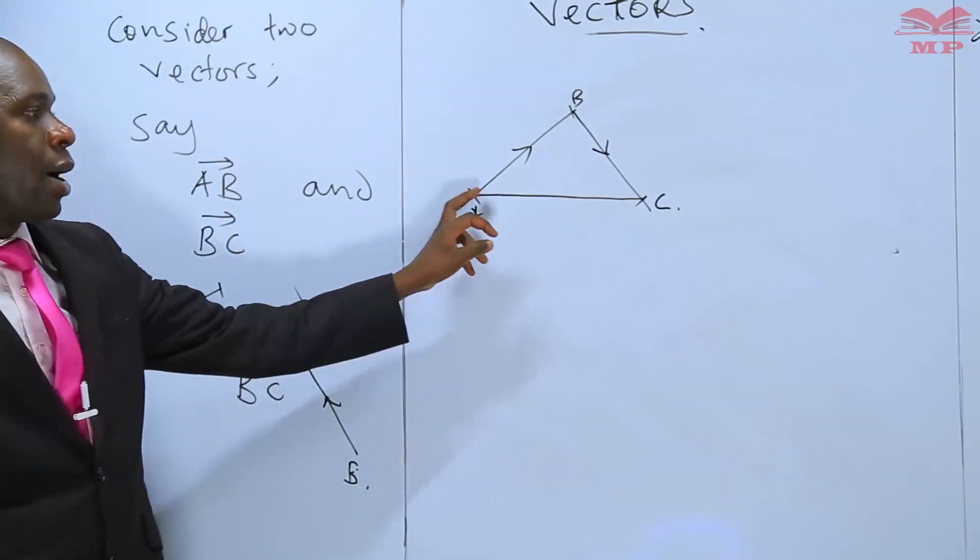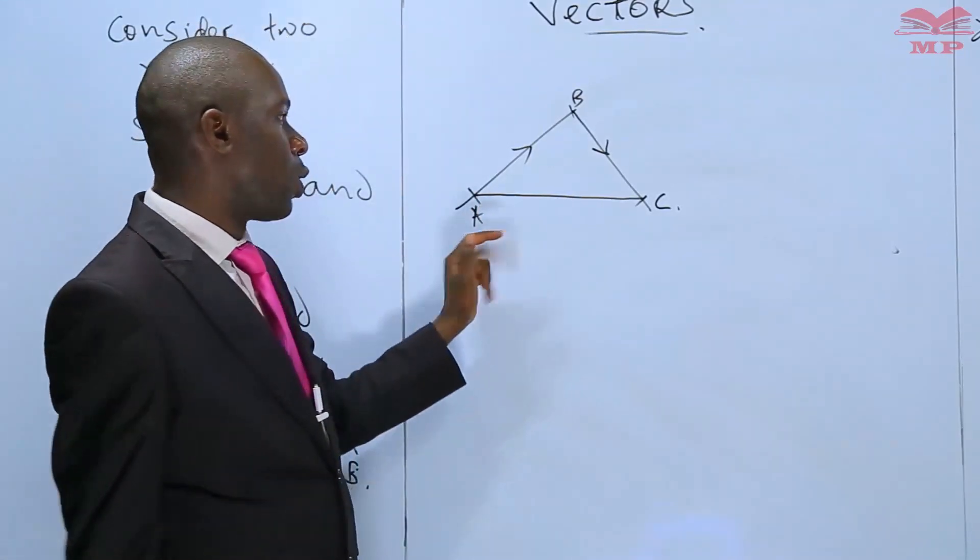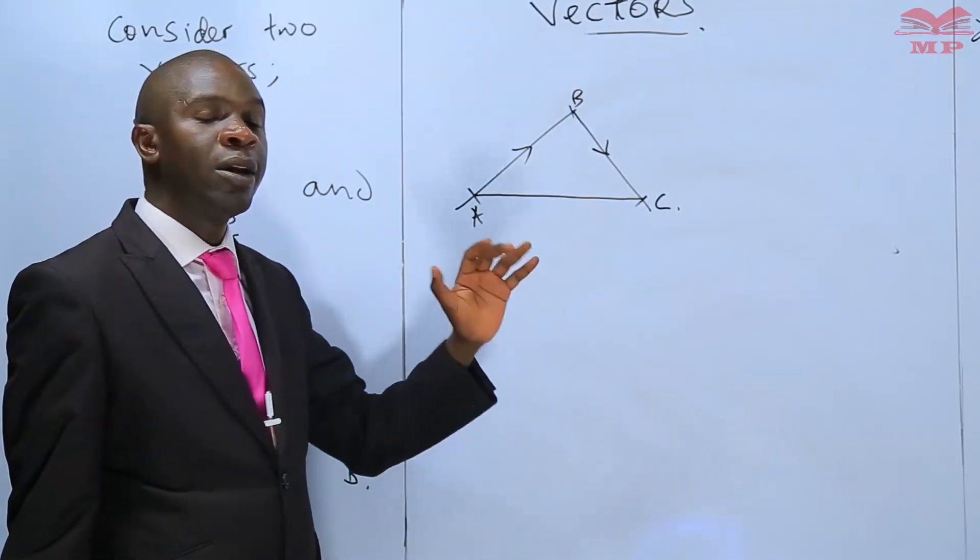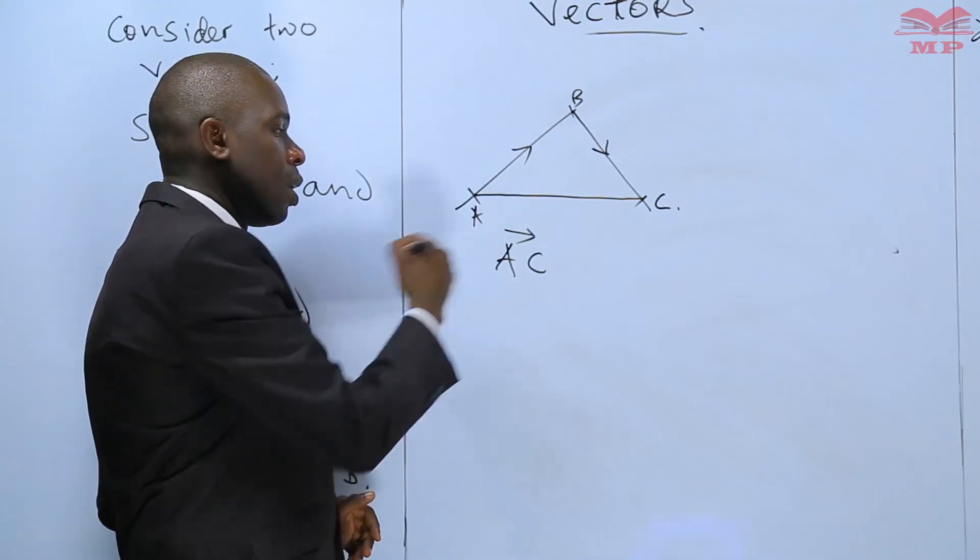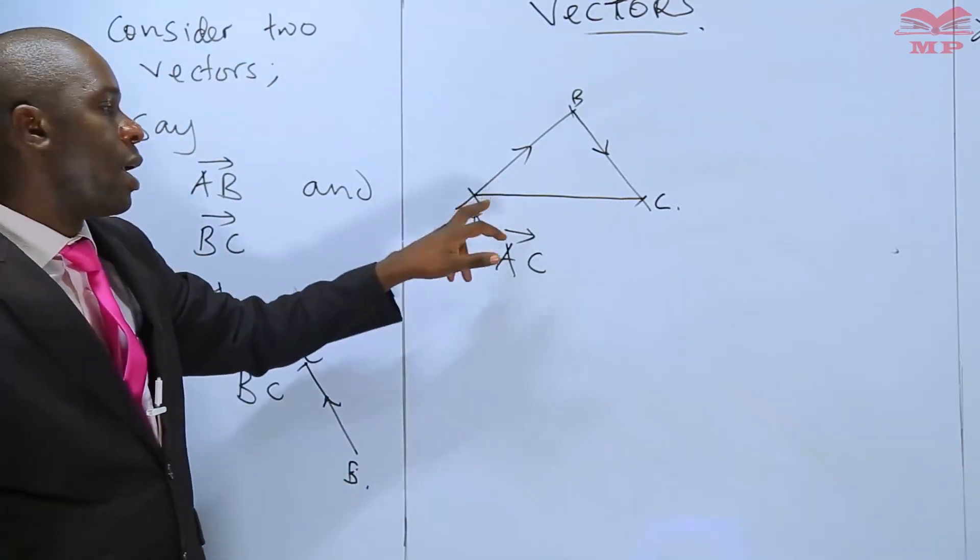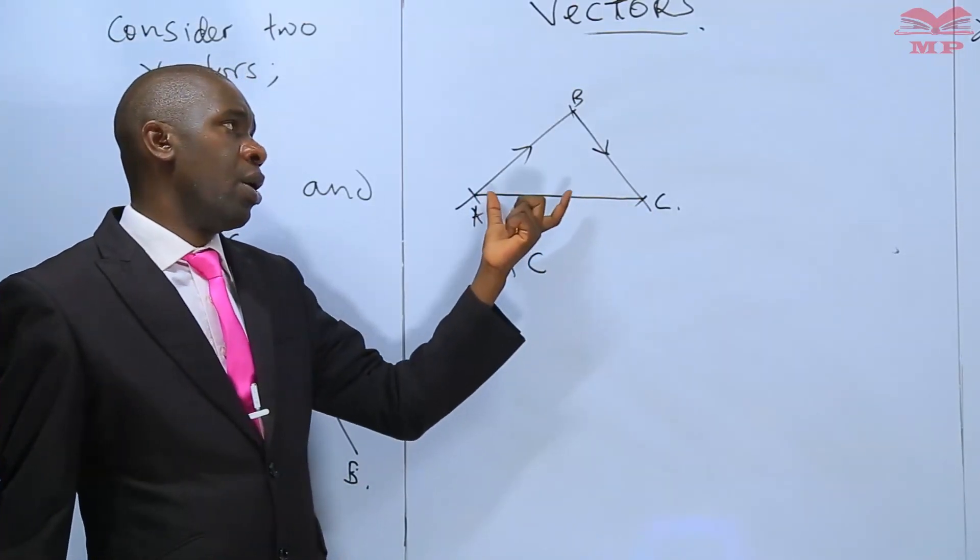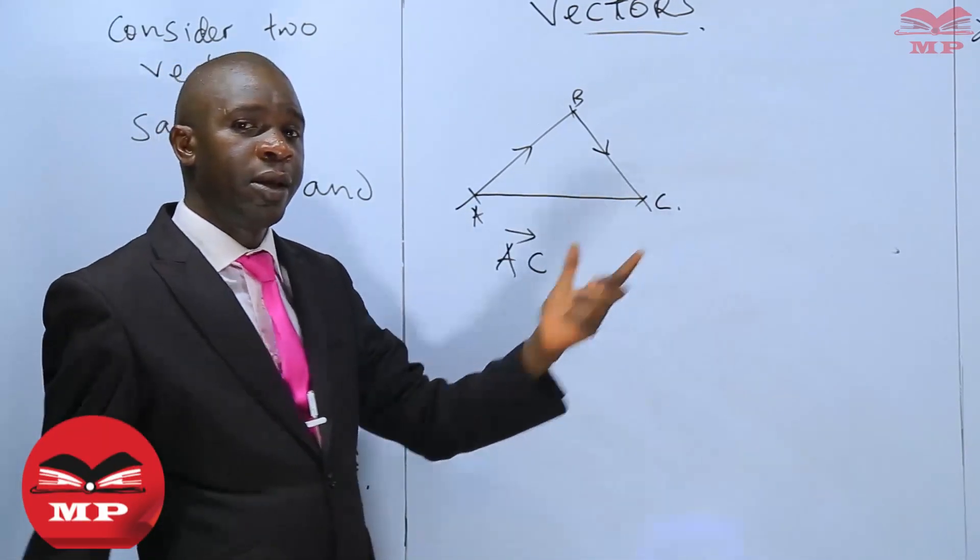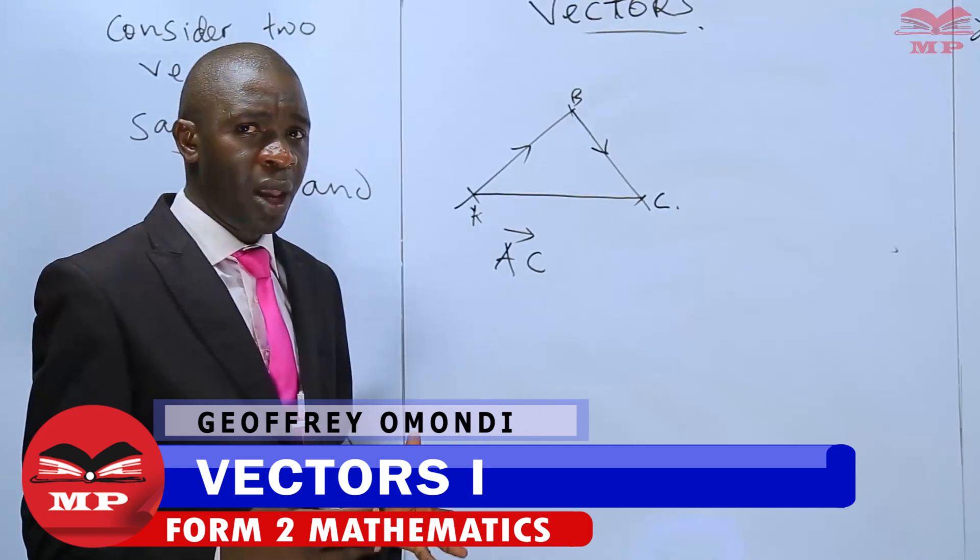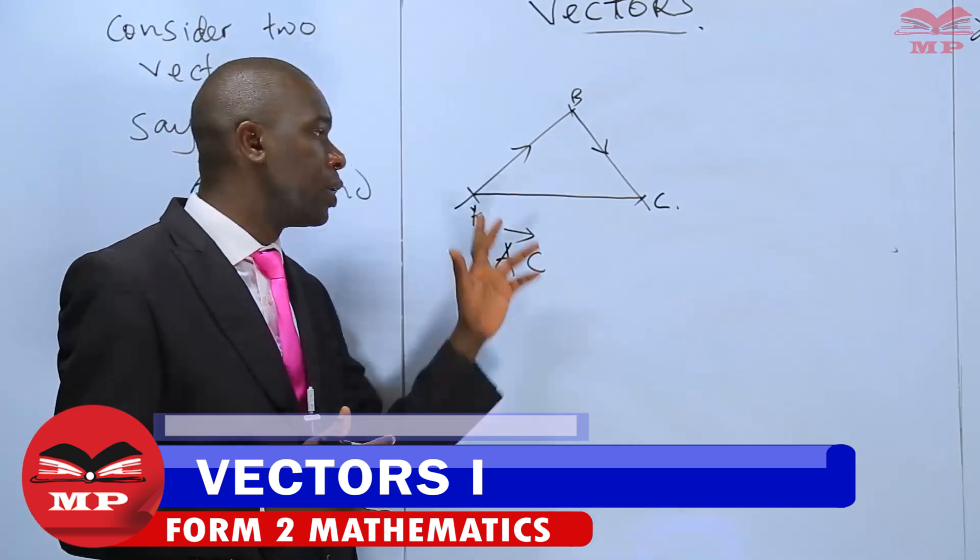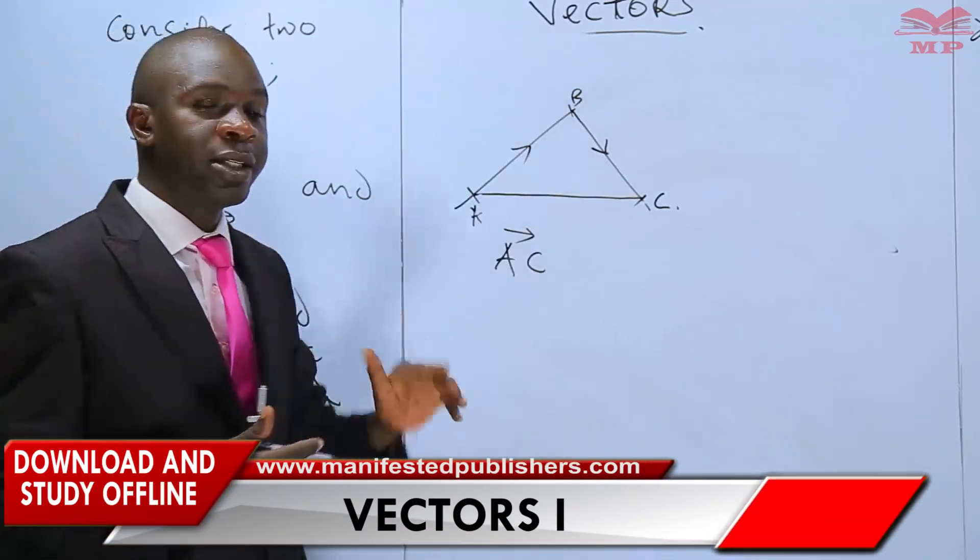Remember, our A to C is not yet a vector quantity because it doesn't have direction. Looking at this, it is possible that we can get vector AC. When we say vector AC, it means that direction is from A to C. To get vector AC, we may not simply say AC because AC is not yet a vector. What can make us have vector quantity of AC is actually adding the various vector quantities that lead from A to C.